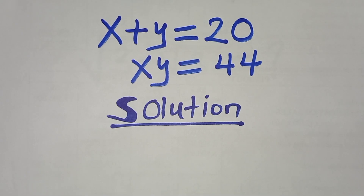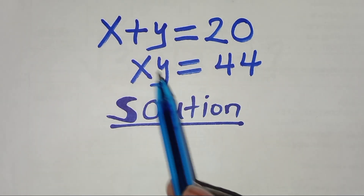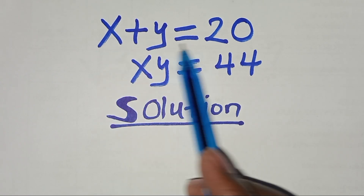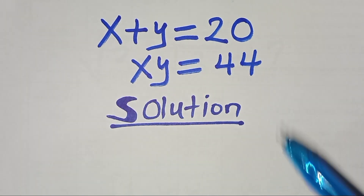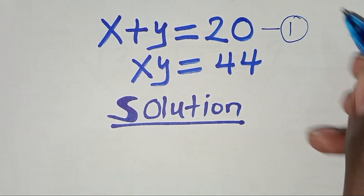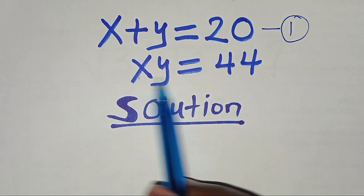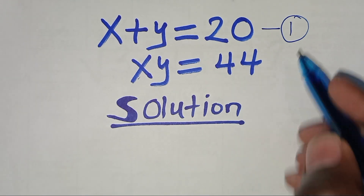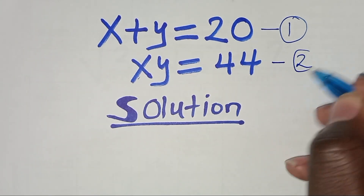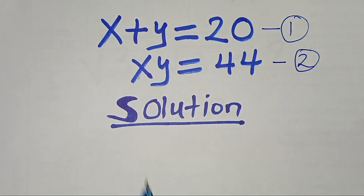Hello everyone, welcome to the provided solution for this algebra problem, which is: x plus y equals 20 — call this Equation 1; and xy equals 44 — call this Equation 2.